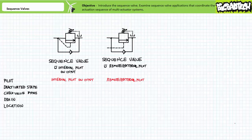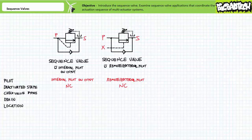Most sequence valves use an internal pilot line that monitors pressure on the input port. Alternatively, some configurations of sequence valves utilize an external remote pilot line. We'll examine both of these configurations. Sequence valves are normally closed valves that open when pressure in the pilot line exceeds the adjustable set value. For all intents and purposes, sequence valves are just like pressure relief valves with some subtle modifications that we'll examine in a moment.